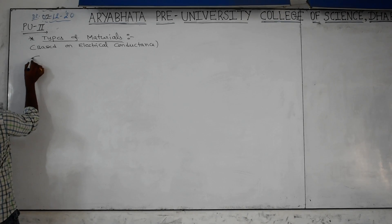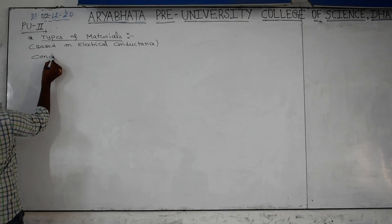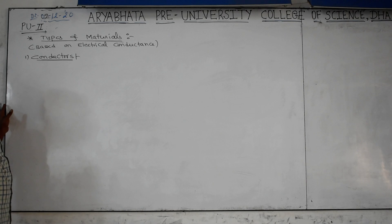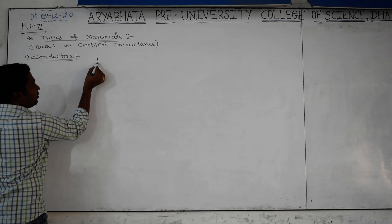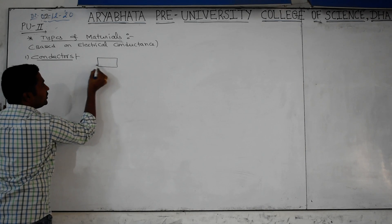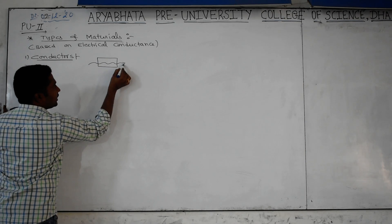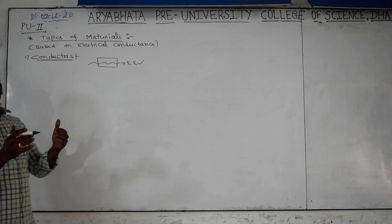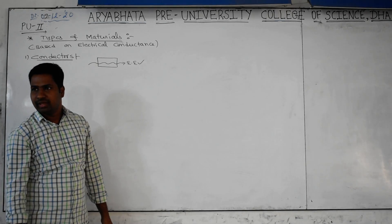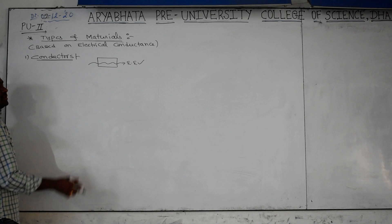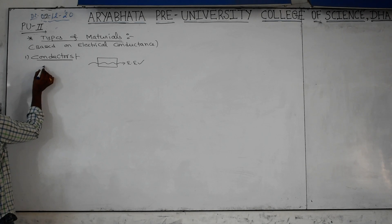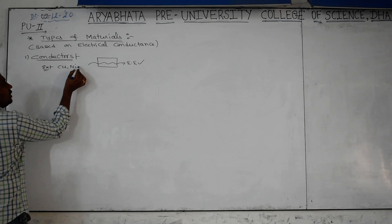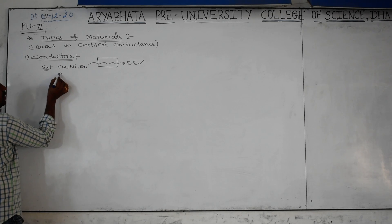First category: conductors. What is the meaning of conductors? Conductors means a material which allows electrical energy to pass through it. Examples of conductors include metals like nickel, copper, and zinc, as well as alloys.